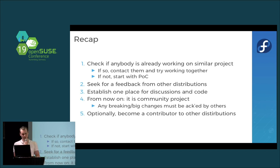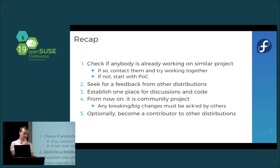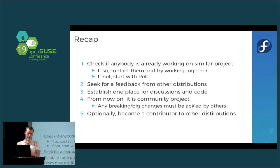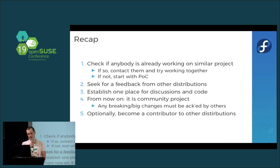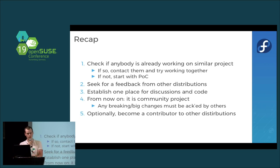If you break things unilaterally, everyone else will say 'this doesn't work for us, we're just going to fork it.' What I personally did was become a contributor to other distributions — so whenever I make changes in raster-pm, I test it on openSUSE to see how it affects that distribution and make changes that help both distributions.